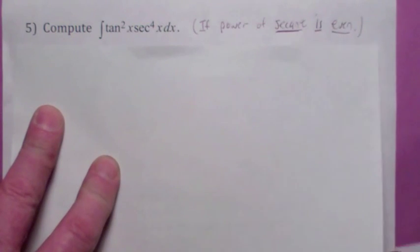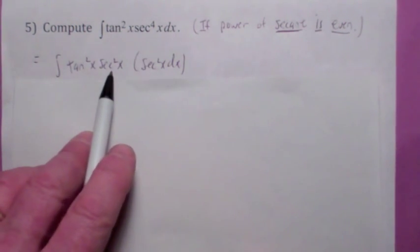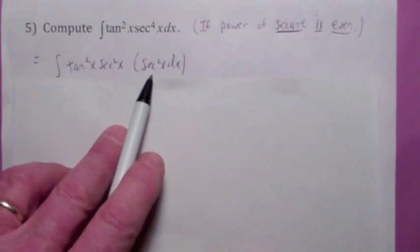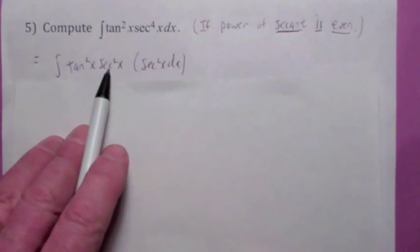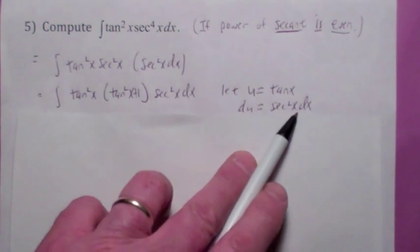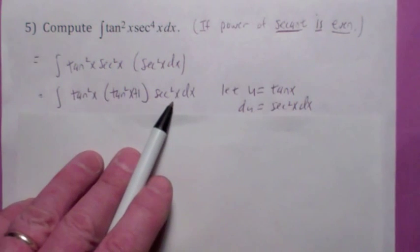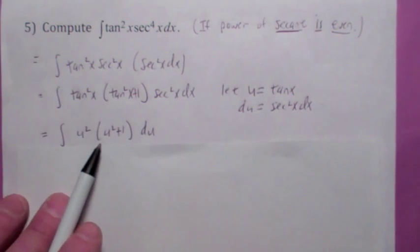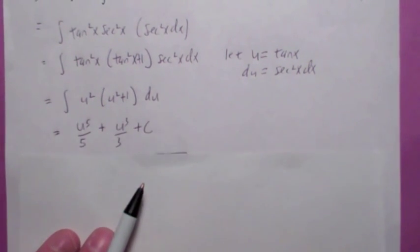If the power of secant is even, you can pull off a secant squared and it will still be even. That secant squared becomes your du, suggesting u equals tangent x. You write the remaining even power of secant in terms of tangent using the identity, so u is tangent and du is secant squared x dx. You end up with a bunch of tangents times the derivative, giving you something like u squared times u squared plus 1 du. When you integrate you get a polynomial in u; substitute back in terms of x.